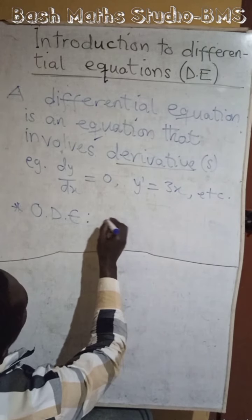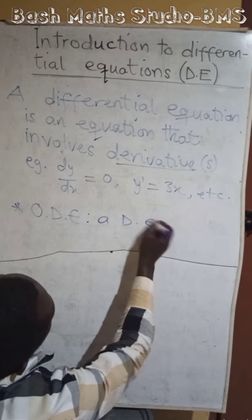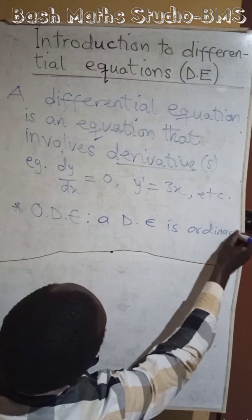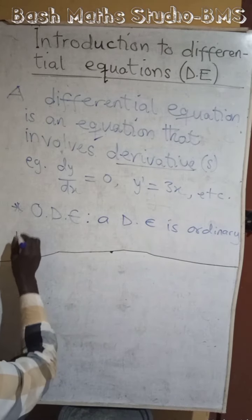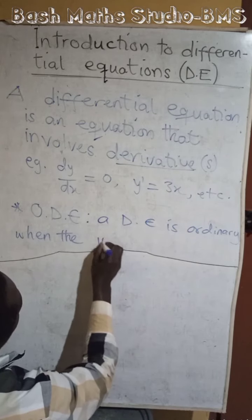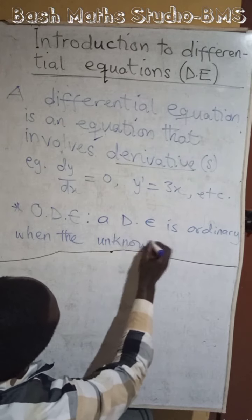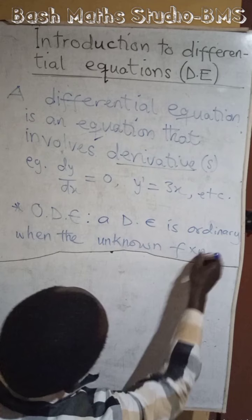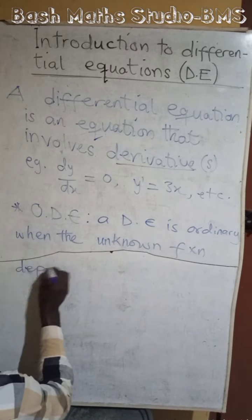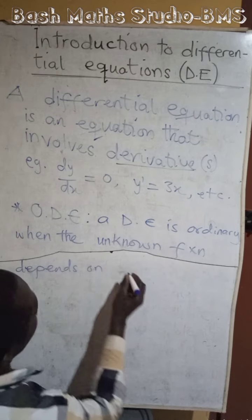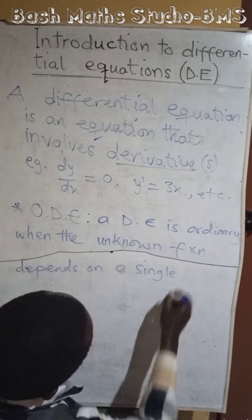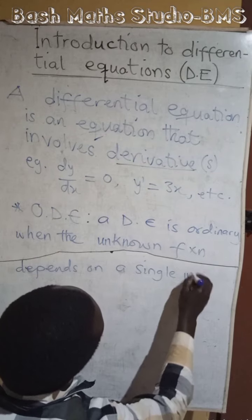So we say a differential equation is ordinary when the unknown function depends on a single known or independent variable.